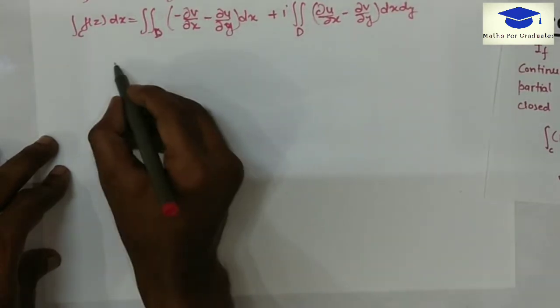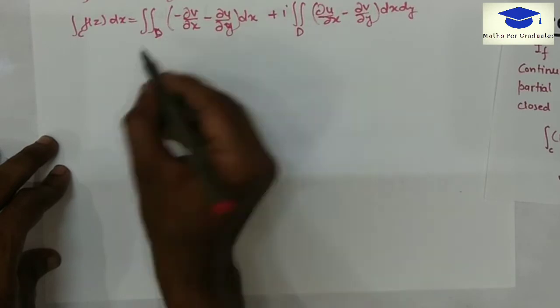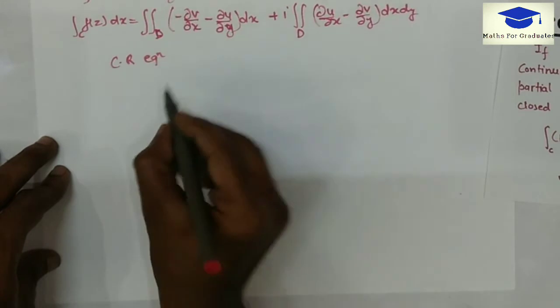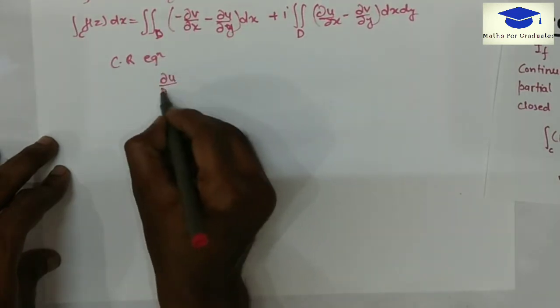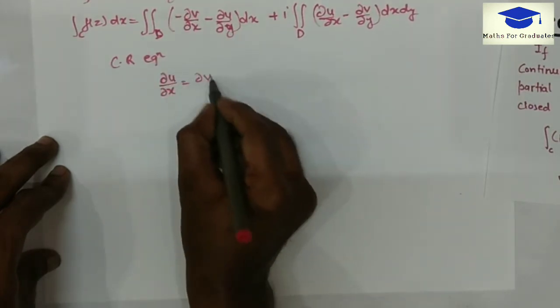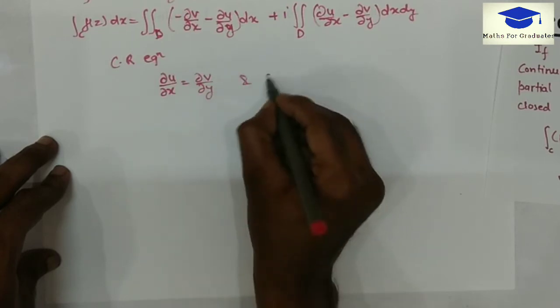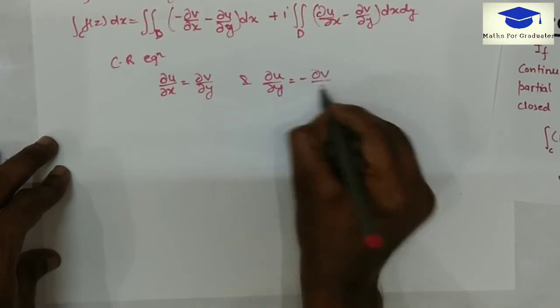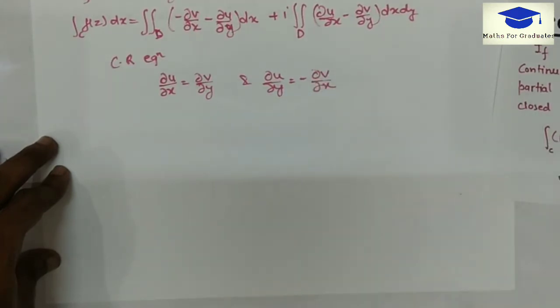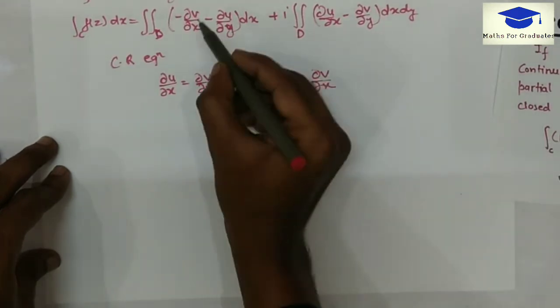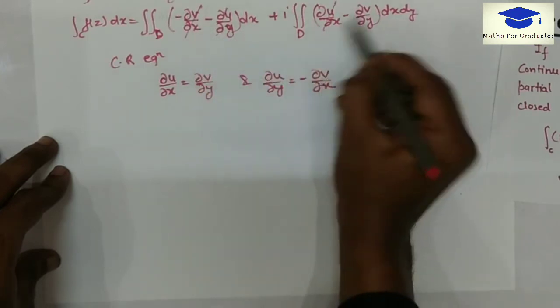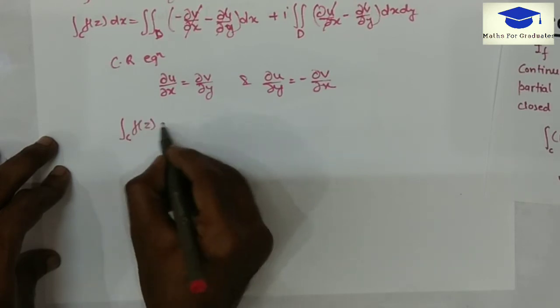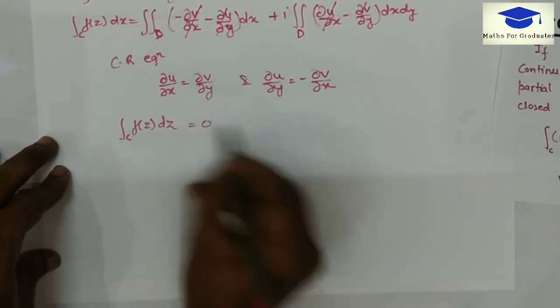And it is given that f of z is analytic. From Cauchy-Riemann equations, del u over del x equals del v over del y and del u over del y equals minus del v over del x. From Cauchy-Riemann equations, this cancels out. Hence, integration of f of z dz will be 0.